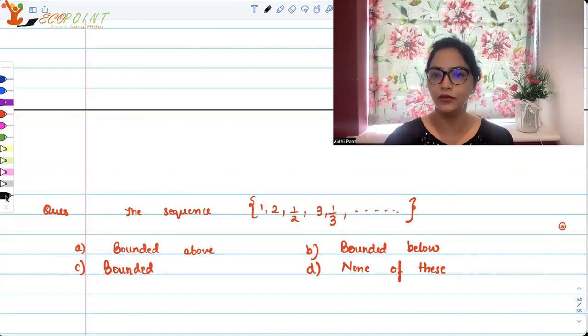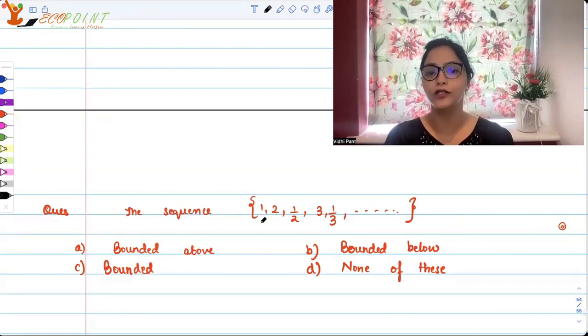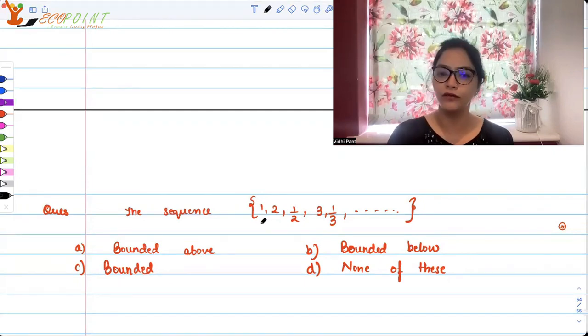When you have certain elements written in a pattern, that set turns into a sequence. So for example, in this question, we have a sequence 1, 2, 1 by 2, 3, 1 by 3, so on and so forth. So there's a pattern here if you can see.